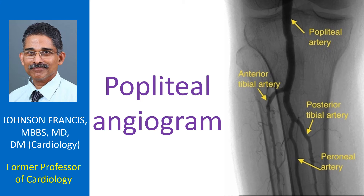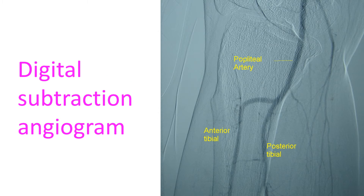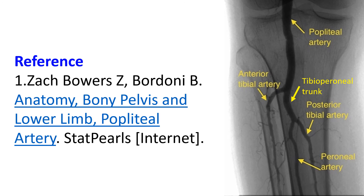Femoral angiography comes under the broad group of peripheral angiography. This is a digital subtraction angiogram of the popliteal artery showing the artery dividing into anterior tibial and posterior tibial arteries. No luminal filling defects are seen. Upper ends of tibia and fibula are seen in profile. Usually the popliteal artery divides into anterior and posterior tibial branches, and the posterior tibial gives off a peroneal branch.